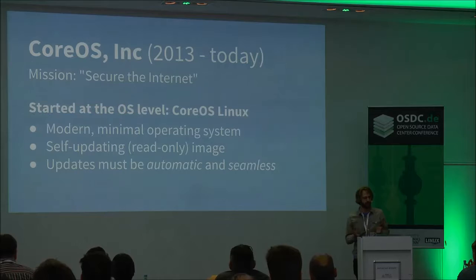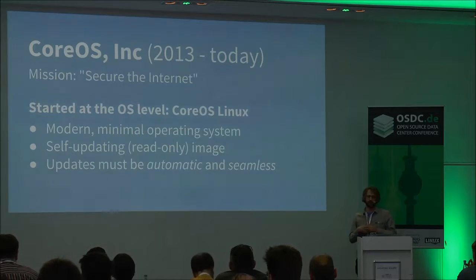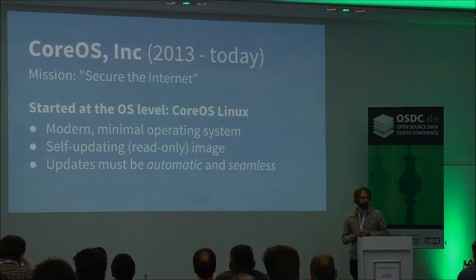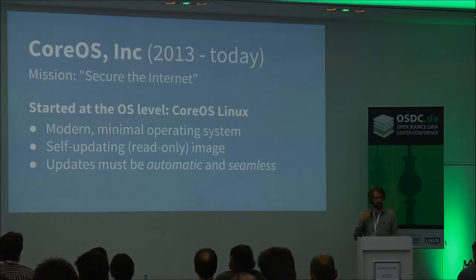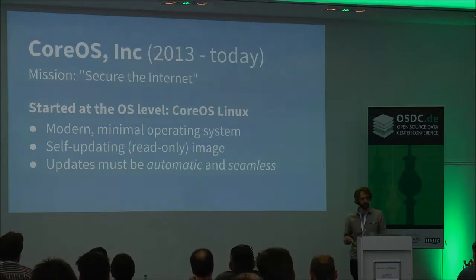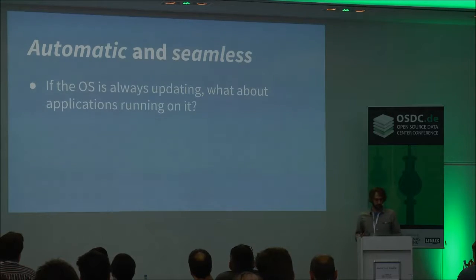CoreOS is a quite minimal distribution of Linux — there's no package manager, for example. What is baked into the operating system is what you get, and it's a read-only operating system image. Every time there's an update, we push that out automatically. The update gets pulled down, applied to the operating system, your system reboots to apply the update, and you get the latest version.